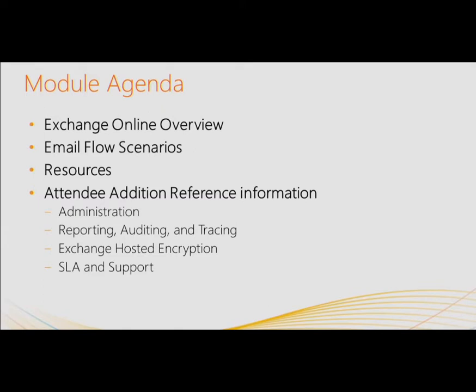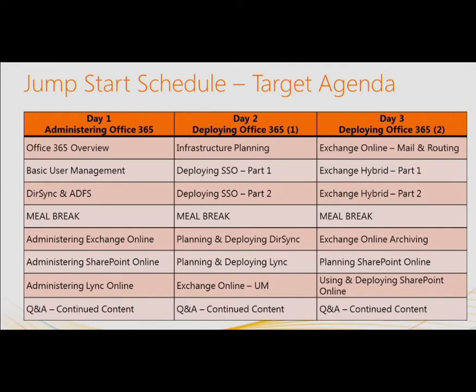First, we're going to talk about Exchange Online and FOPE — Forefront Online Protection for Exchange — which is our anti-spam and anti-virus system, and how it plays its role within Office 365. What scenarios you could be up against that you need to plan for, or apply a particular feature. From there, into session two, we'll jump into more of the migration techniques, starting with staged and cut-over migration. We'll get a solid handle on scenarios to gauge which migration technique to use: staged, cut-over, or hybrid.